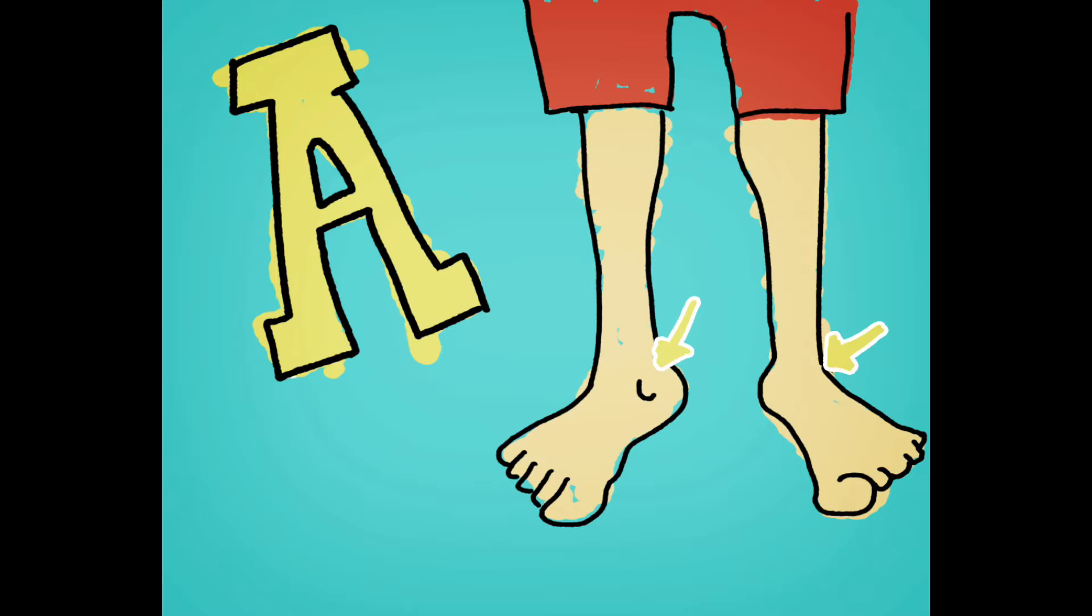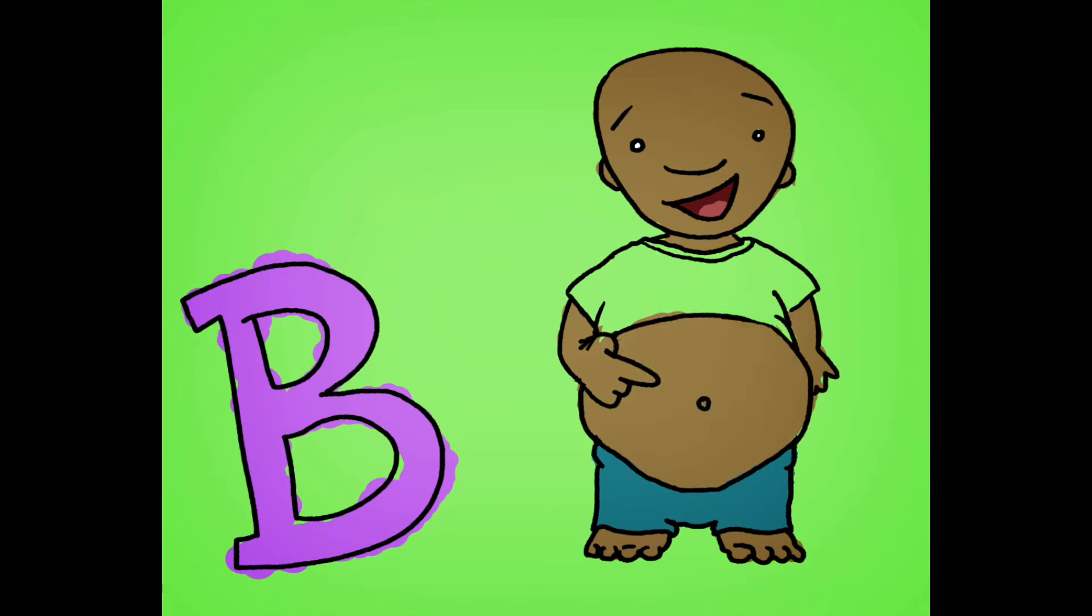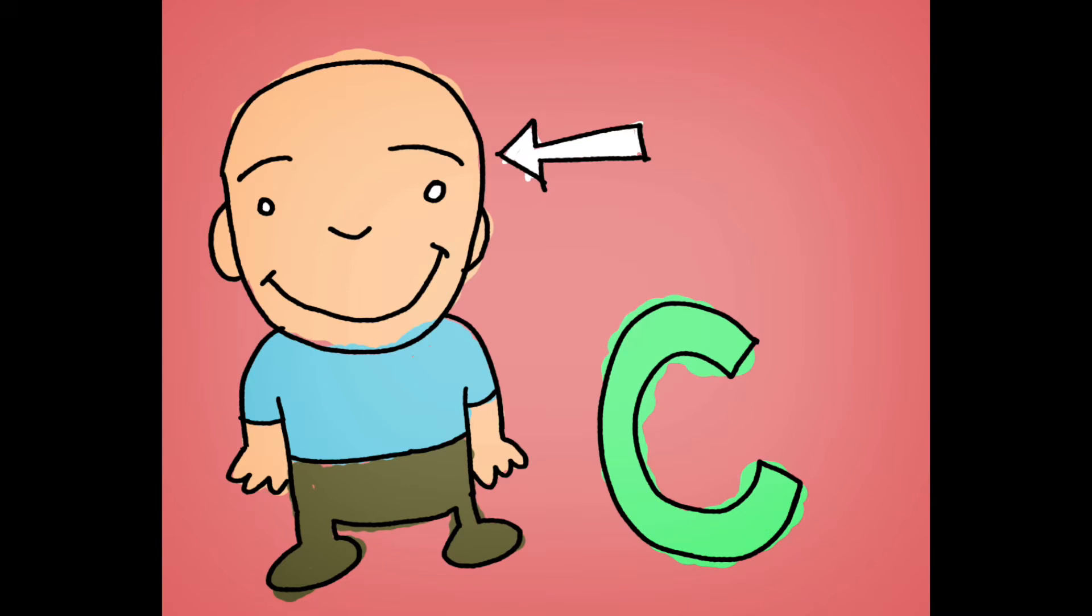A is for ankle, ankle. B is for belly button, buh buh, belly button. C is for cranium, kuh kuh, cranium.